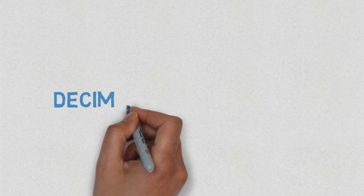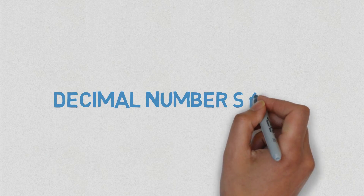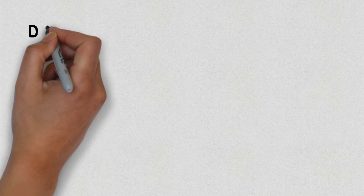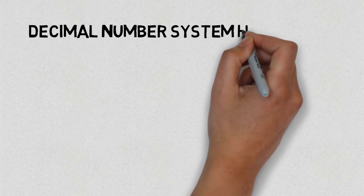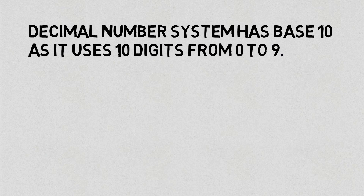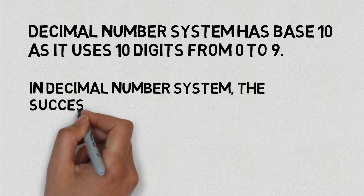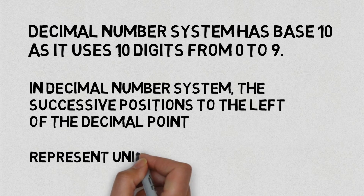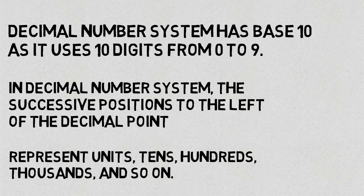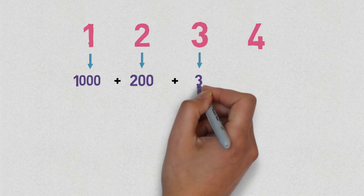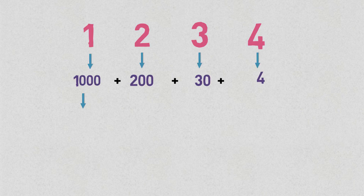First, we will look at the decimal number system, which is used in real-life scenarios. The decimal number system has base 10, as it uses 10 digits from 0 to 9. In the decimal number system, the successive positions to the left of the decimal point represent units, tens, hundreds, thousands, and so on. For example, take the number 1234 — this comprises one thousand, two hundreds, thirty, and four.